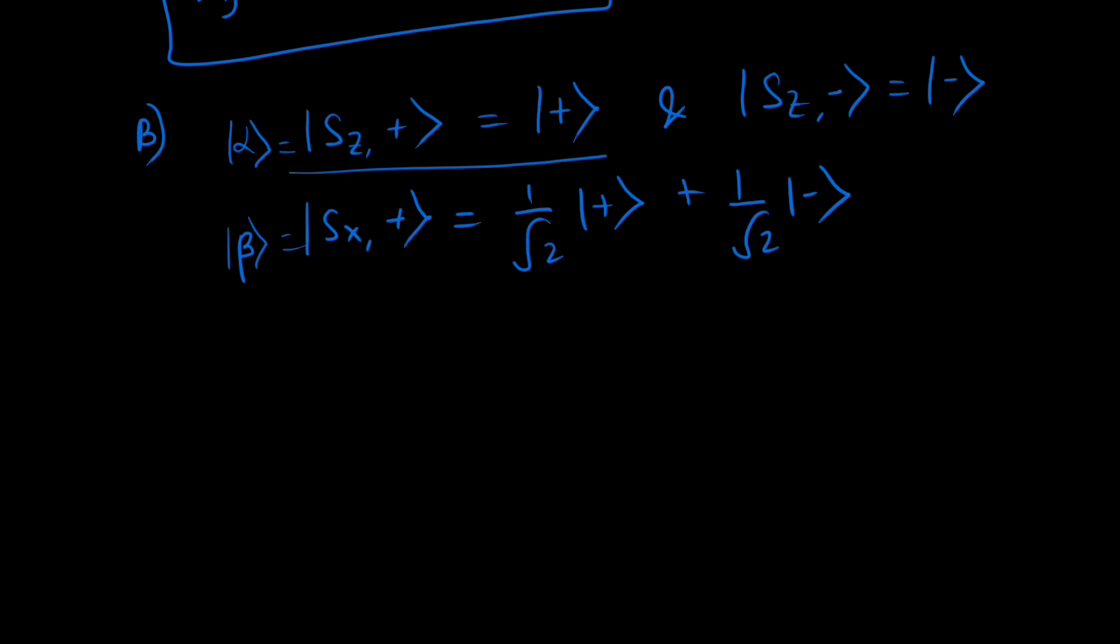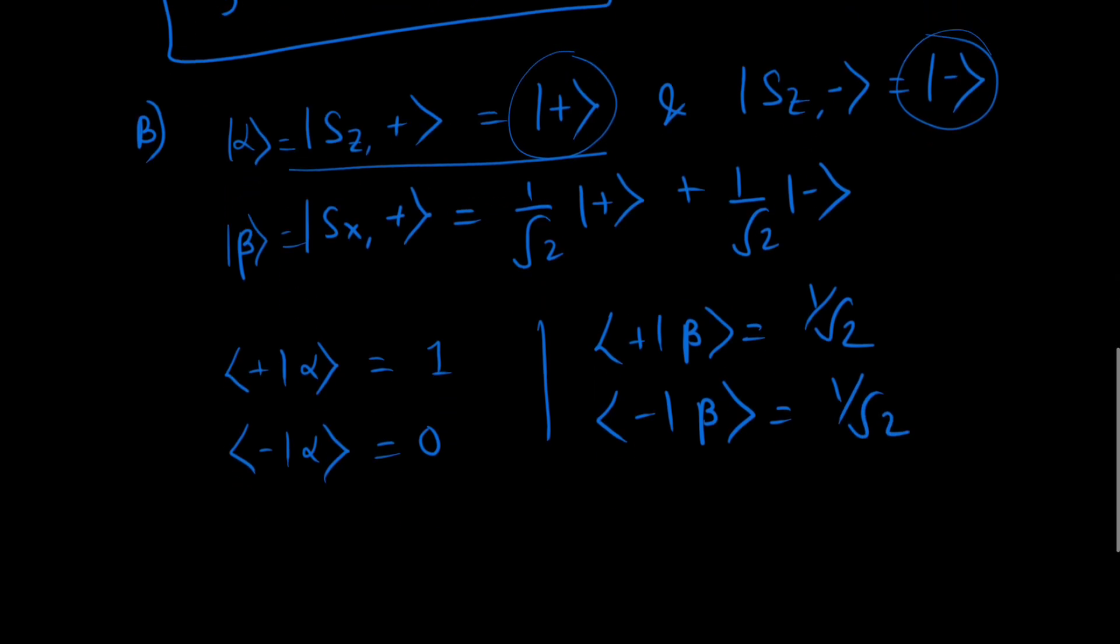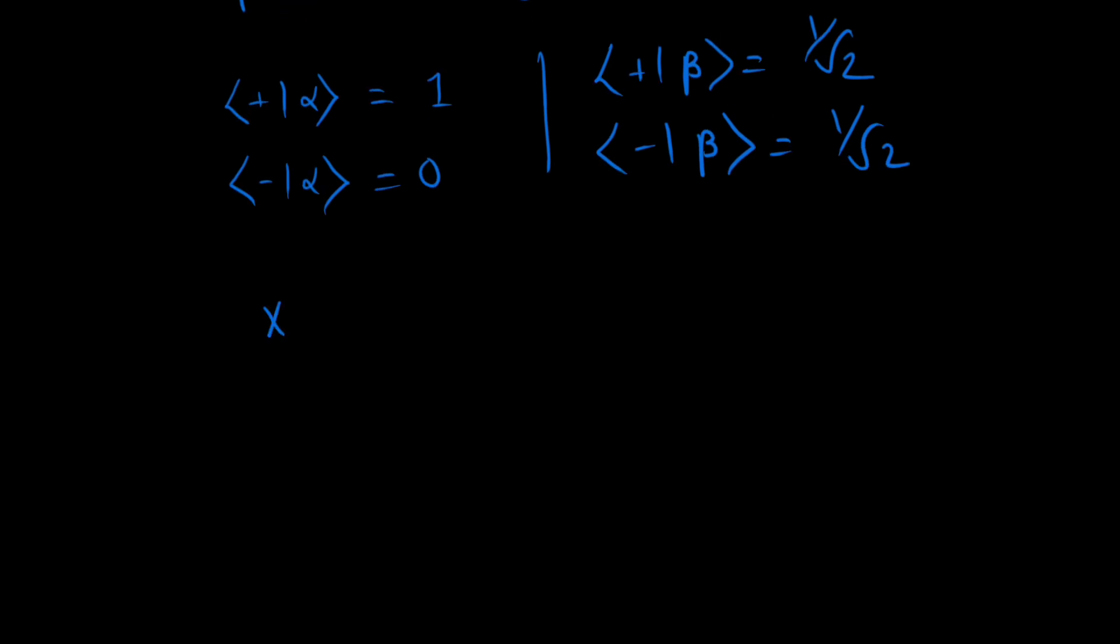So let's find out these four quantities since plus and minus are our basis here. We'll calculate these four quantities. We have plus alpha which is just 1, and minus alpha which would be 0. And we have plus beta which would be 1 by root 2, and minus beta which would be 1 by root 2 as well. So the matrix xij would look like, let's calculate the first element: x11, x12, x21, x22.